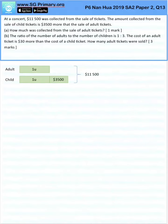Question 13. At a concert, $11,500 was collected from the sale of tickets. The amount collected from the sale of child tickets is $3,500 more than the sale of adult tickets.